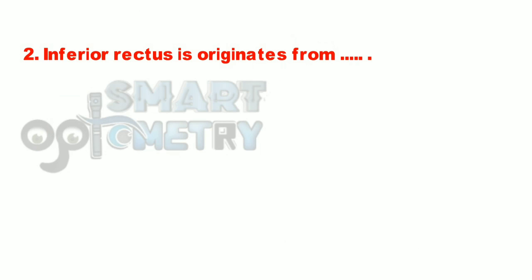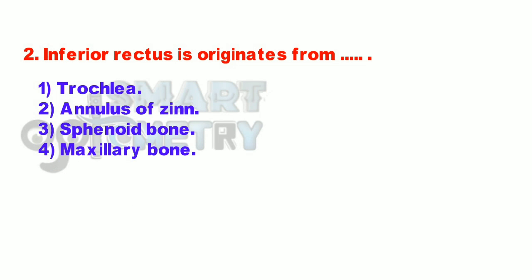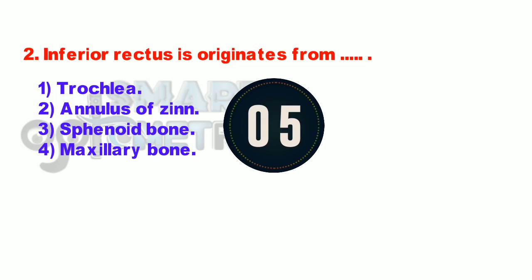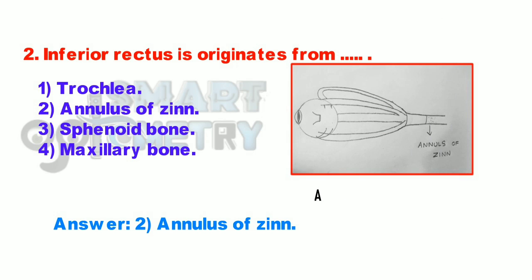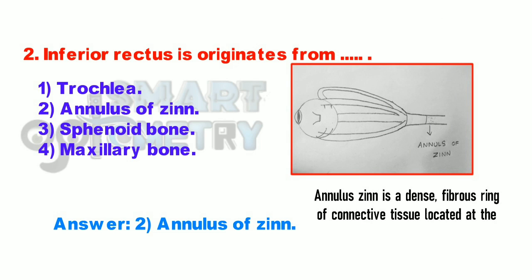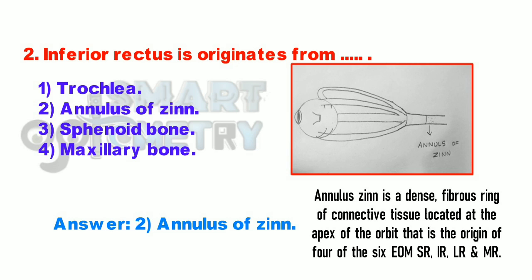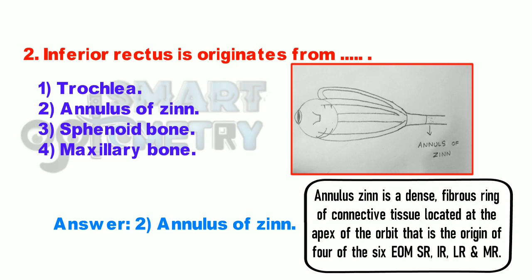Q2. Inferior rectus originates from: 1. Tracula. 2. Annulus of Zinn. 3. Sphenoid bone. 4. Maxillary bone. Annulus of Zinn is a dense fibrous ring of connective tissue located at the apex of the orbit, i.e., the origin of 4 of the 6 extraocular muscles: superior rectus, inferior rectus, lateral rectus, and medial rectus.